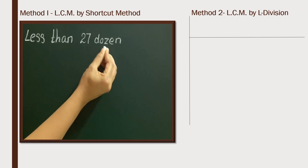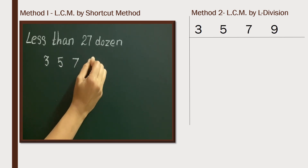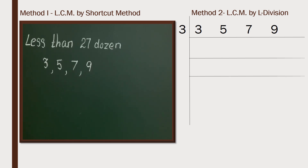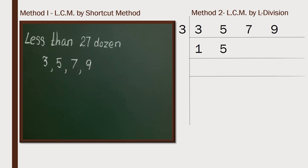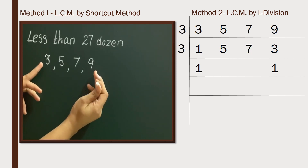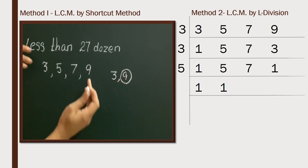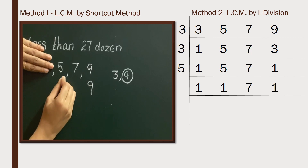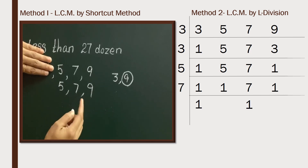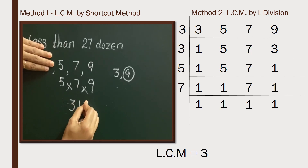Word problem: there are less than 27,000 eggs in a basket. If the eggs are counted as 3, 5, 7, or 9 at a time, none are left over. This means the number of eggs is divisible by 3, 5, 7, and 9. Since 9 is a multiple of 3, we can drop 3 and keep only 9. The remaining numbers 5 and 7 are prime, so multiply: 5 times 7 is 35, and 35 times 9 is 315. So there are 315 eggs in the basket.